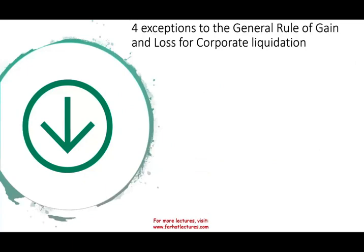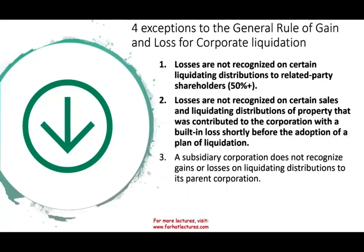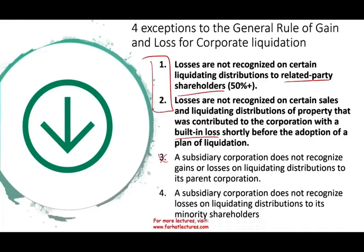We're going to keep looking at the four exceptions to the general rule when a corporation liquidates. The rules are: you cannot recognize a loss if it's a related party loss; you cannot recognize a loss if it's a built-in loss — we call those the anti-stuffing rule. We discussed those. In the prior session we looked at the distribution between a corporation and subsidiary, and we also looked at when the subsidiary corporation does not recognize a loss on a liquidating distribution to its minority shareholders.